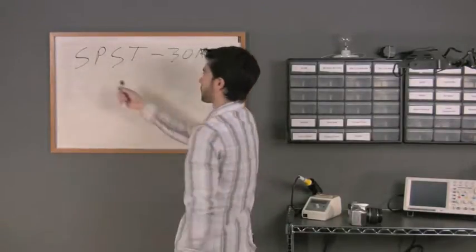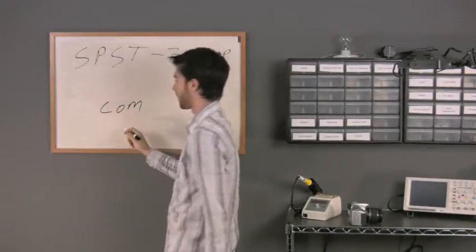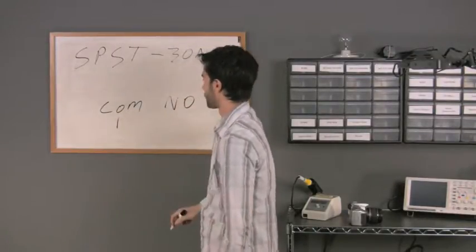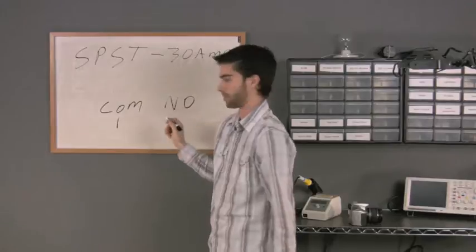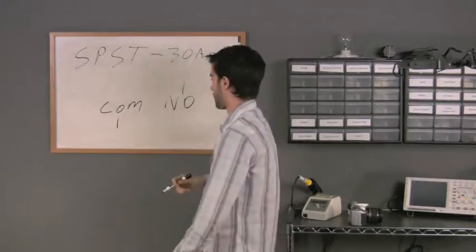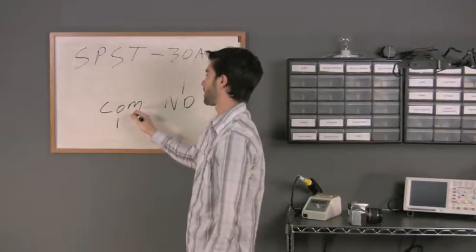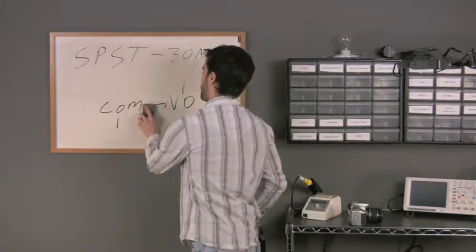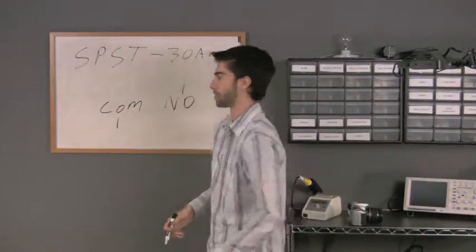Let's look at this real quick. With a single-pole, single-throw relay, you have a common — which is your input into the relay — and then you have a normally open. Whenever the relay is energized, the common connects to the normally open. The normally open is your output; it's where you would hook your device, like a light. Your common is where you would hook the power for the light. So whenever the relay comes on, the common connects to the normally open and feeds the power into the light. When the relay is off, the common and normally open are disconnected, so the light goes off.